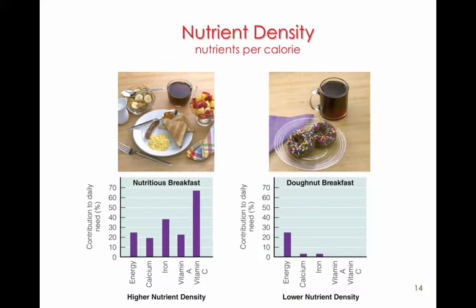Nutrient density is something folks who are watching their weight are interested in — it's the nutrients found per calorie. We're looking at two different 500-calorie options: on the left, toast, eggs, turkey sausage, fruit, and cereal, all for 500 calories. On the right, two chocolate sprinkled doughnuts and a cup of coffee. These are about equal in calories, but what's significantly different is the amount of nutrients found in each meal. I believe you can determine which one is more dense in nutrients.